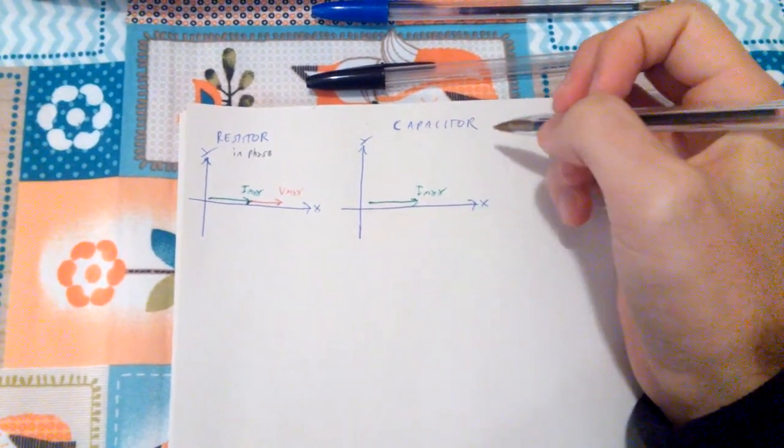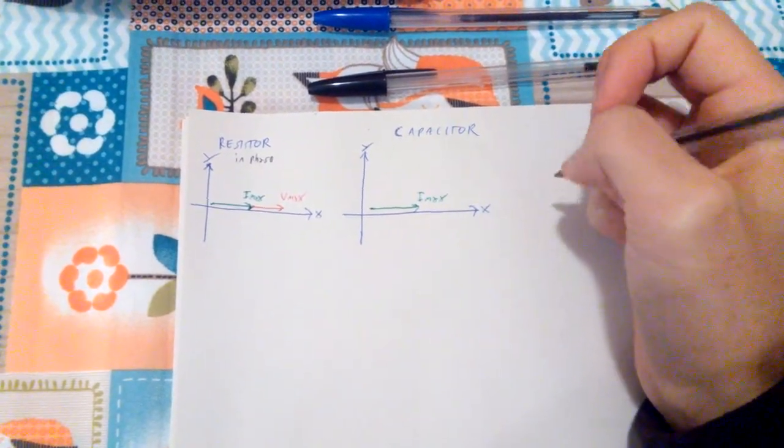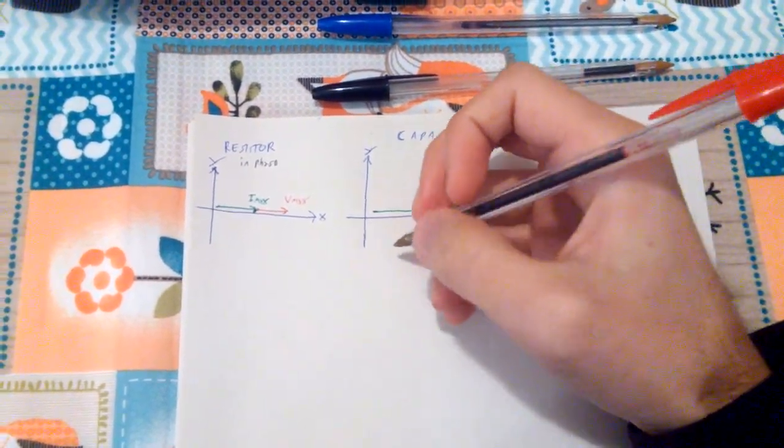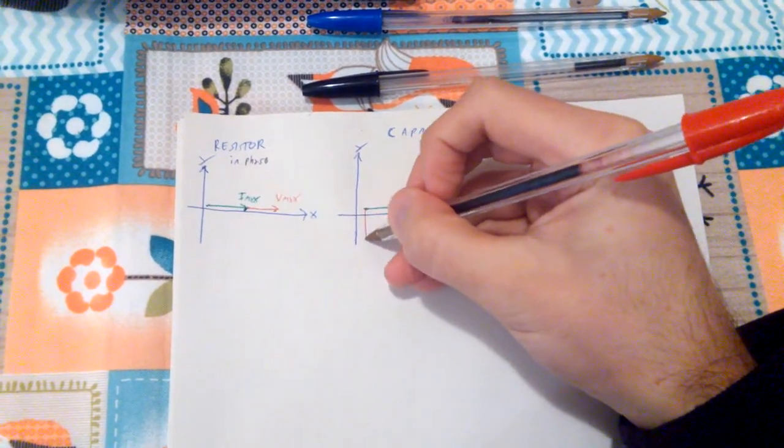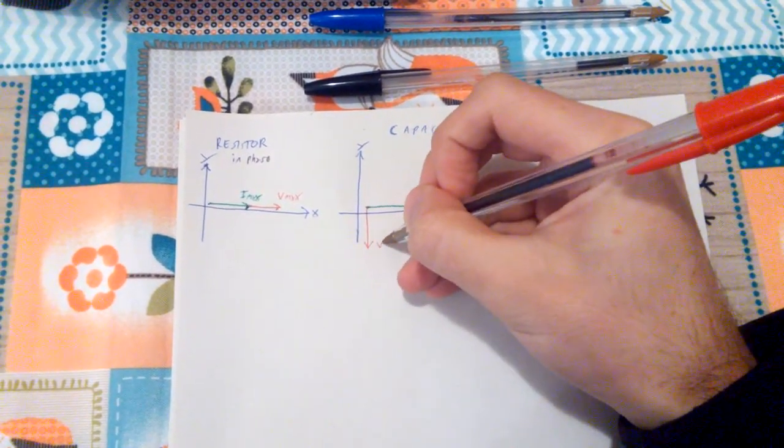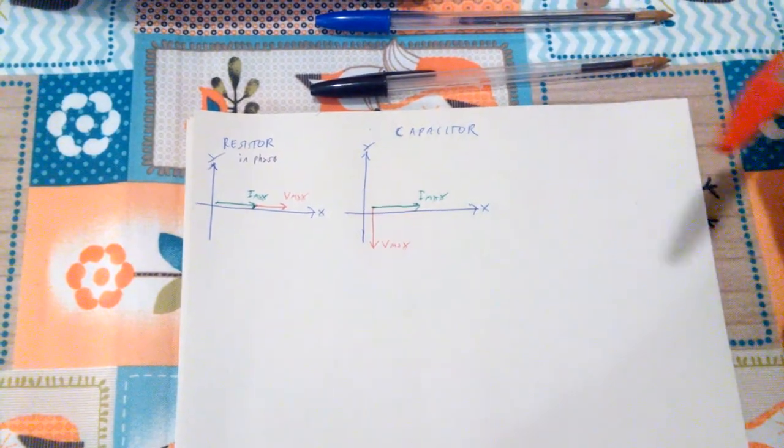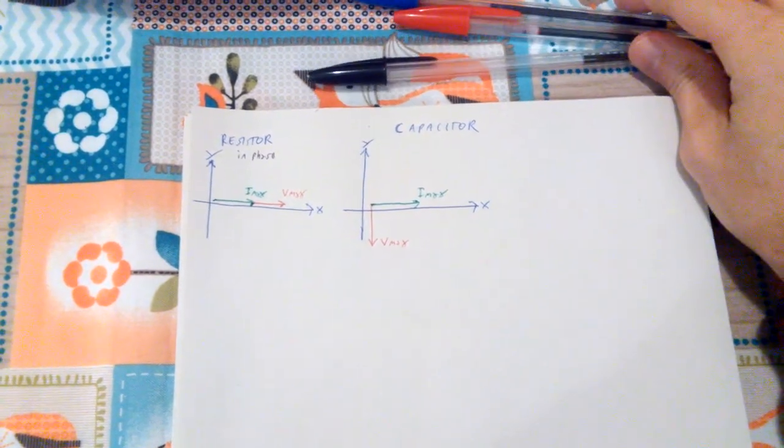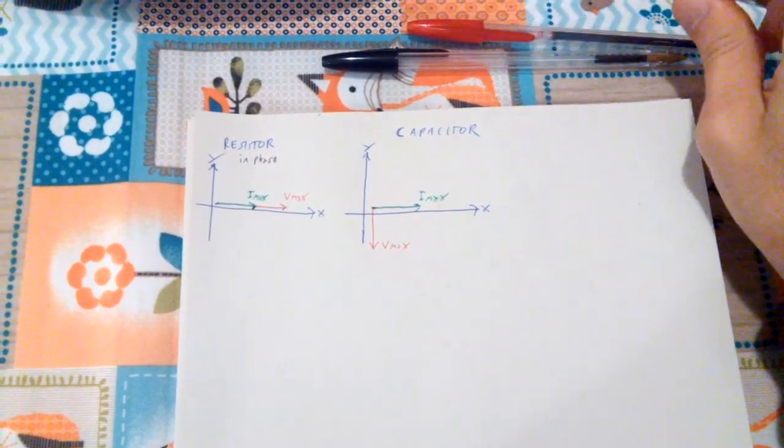So then, if I said we have a 90 degree shift, so our Vmax will be pointing down like so. So they're not in phase, there is a 90 degree shift.